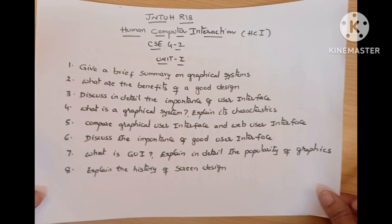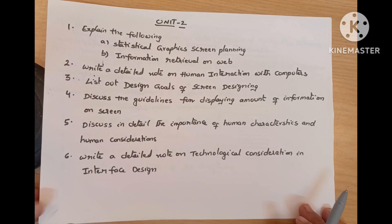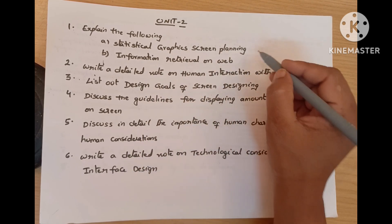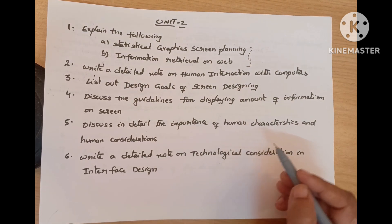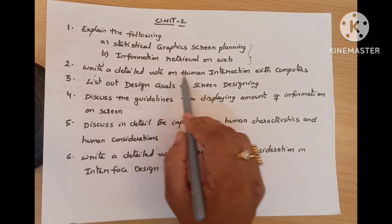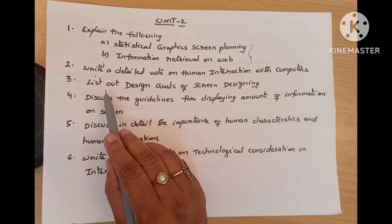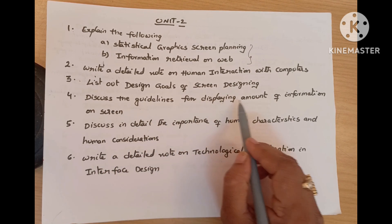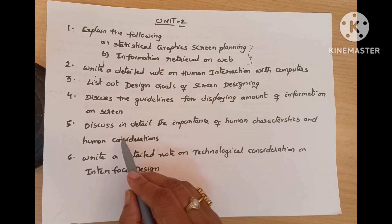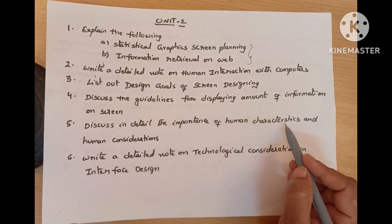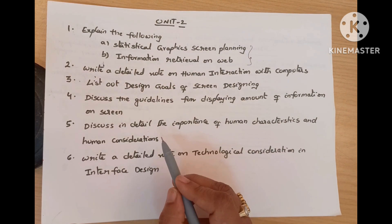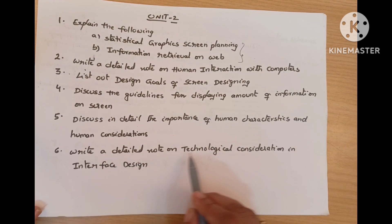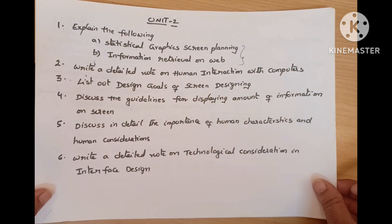And the last one is: explain the history of screen design. These are all old question paper questions — read carefully. Next, two important questions are: explain the following — statistical graphics, screen planning, and information retrieval and web. Next, write a detailed note on human interaction with computers — very important question. List out design goals of screen designing. Discuss the guidelines for displaying amount of information on screen. Discuss in detail the importance of human characteristics and human considerations — very important question. Write a detailed note on technological consideration in interface design. These are all very important questions.